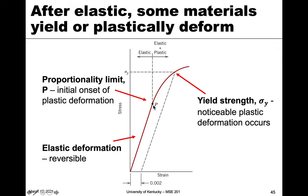The proportionality limit is often very difficult to find exactly because strains are very small, and the point where it deviates from linear behavior is hard to identify. So instead we rely on a slightly more obvious indication called noticeable plastic deformation — that's the yield strength or yield point. This is where we effectively say plastic deformation has happened. This is our yield strength, sigma y.